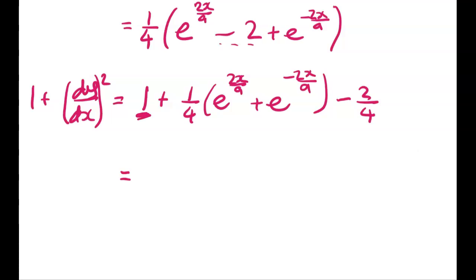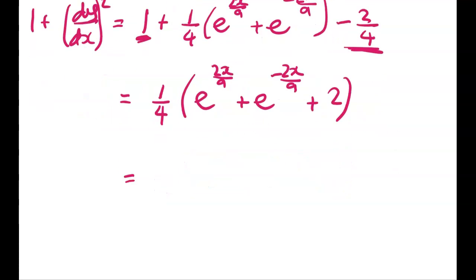And that, because I can see that I'm going to want to combine the 1 with whatever constant I've got. Now that gives me 1 quarter of e to the 2x over a, plus e to the negative 2x over a. 1 minus 2 quarters leaves me with positive 2 quarters. So we're going to have a plus 2 in here now, right?